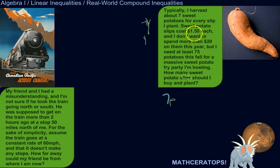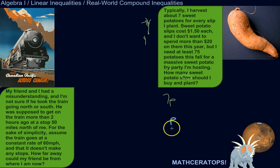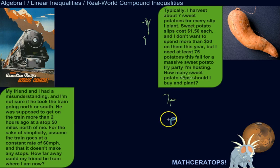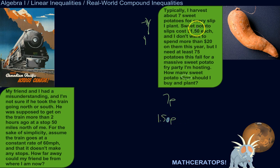Sweet potato slips cost $1.50 each. So for every sweet potato slip that I buy, it's going to cost me $1.50 — so $1.50 times however many I buy.